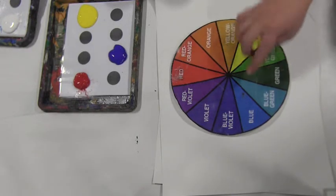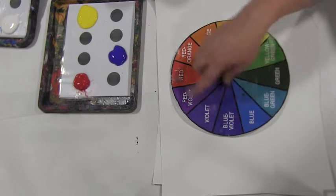The three primary colors, red, yellow and blue, are the colors that we're going to use to create all the colors in the color wheel.